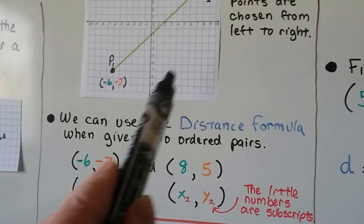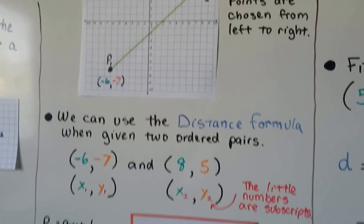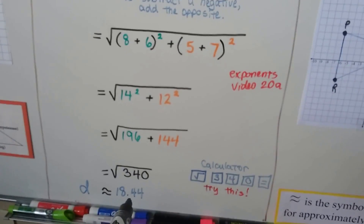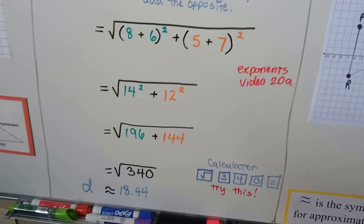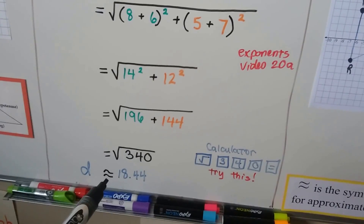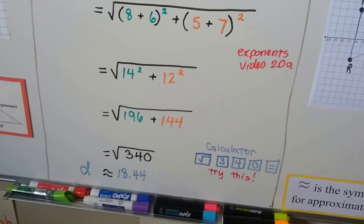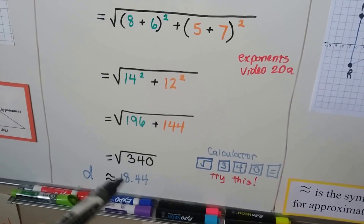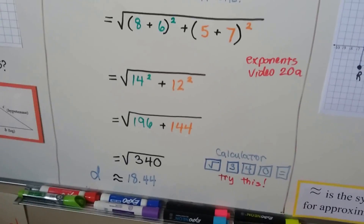If each of these squares is a centimeter, then the answer is 18.44 centimeters. If each square was an inch, it would be inches. If each square was a yard, it would be yards. So depending on the increment of the grid, that's the unit you'd use.